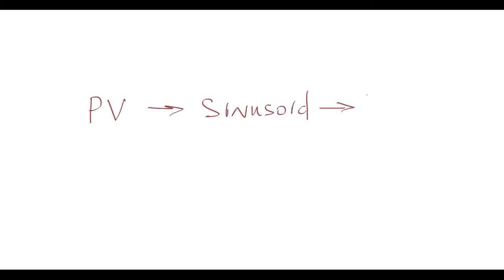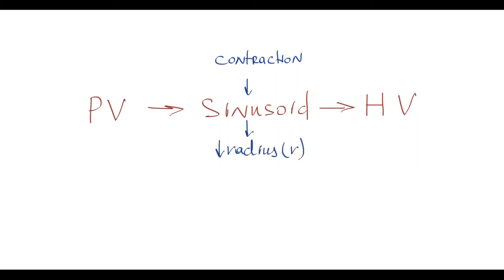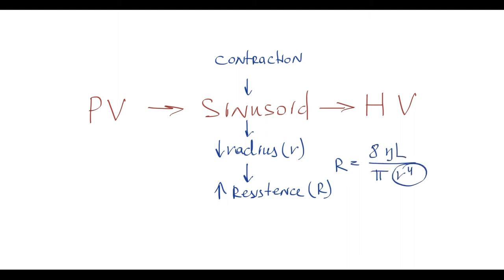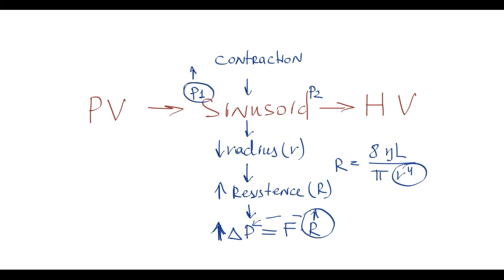The problem is that contraction can affect blood vessels. In normal intrahepatic circulation, blood from the portal vein goes to the sinusoid and then to the hepatic vein. But tissue contraction can affect the sinusoid — contraction leads to decrease in sinusoid radius, and decrease in sinusoid radius causes increase in sinusoid resistance, because resistance is inversely proportional to the fourth power of radius. Increased resistance causes rising intrasinusoid pressure, because from Ohm's law we know that the pressure difference equals flow times resistance. So with increase in intrasinusoid resistance, the pressure difference increases, primarily by increase in pressure at the upstream end — this increased pressure is transmitted to the portal vein, causing increase in portal pressure, i.e., portal hypertension.